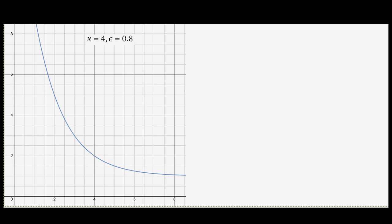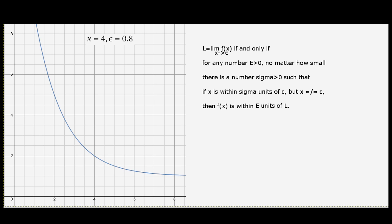Before we start, we should explain what a formal limit is. A formal limit states that as the limit of f of x as x approaches c for any epsilon greater than 0, no matter how small, there is a number sigma or delta such that if x is within delta units of c but x doesn't equal c, then f of x will be within epsilon units of the limit.